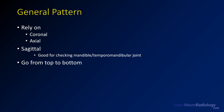When looking at CTs of the face, you really want to rely on your reconstructions, particularly the coronal. The coronal is a key part of your exam. The axial is a nice addition. The sagittal you don't have to use too much, but it's nice for checking the mandible, the TMJ, and the upper cervical spine. As a general rule, try to go from the top to the bottom of the exam.